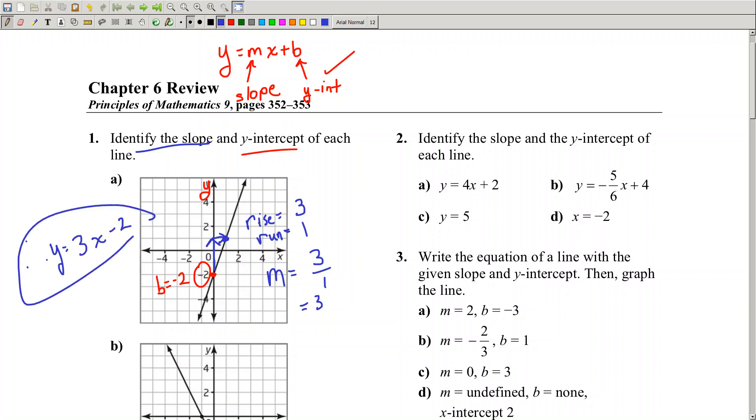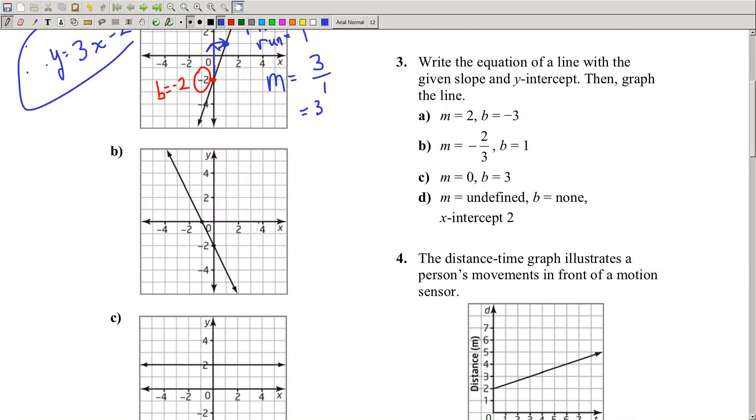Now let's do the y-intercept for this equation. We've got negative 2, so b equals negative 2. What is the slope? Let's pick out a second point.